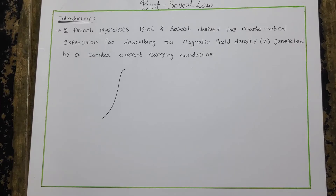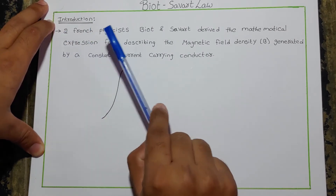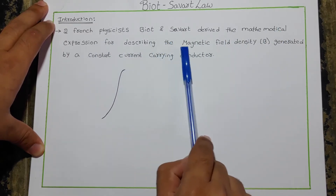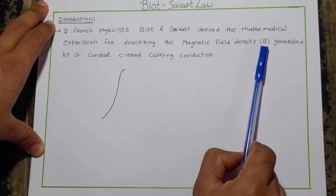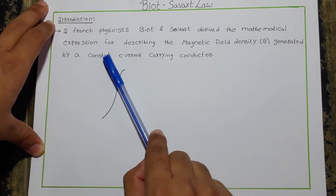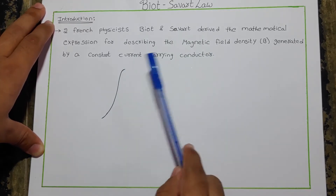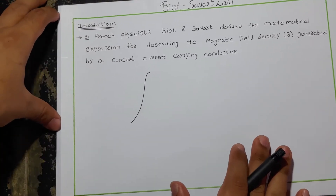Hello friends, welcome to Everything Unit. Today in this video we are going to learn about the Biot-Savart law. The introduction: two physicists, Biot and Savart, derived the mathematical representation for describing the magnetic field density, represented by B, generated by a constant current-carrying conductor.